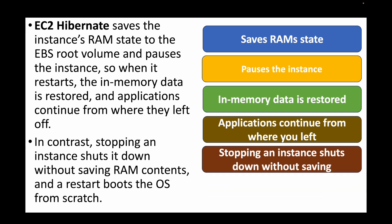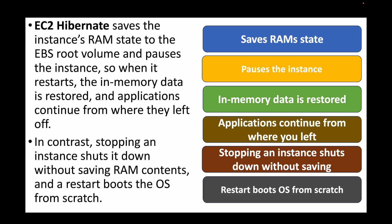Stopping the instance, on the other hand, does not save the RAM's content. If you stop and start the machine, you need to start the application from scratch — it boots from scratch, and whatever in-memory data the application had will be lost. So the key difference is: EC2 hibernate stores the RAM state and you can restore it, whereas when you stop an instance the RAM state is not saved and you are starting from scratch.